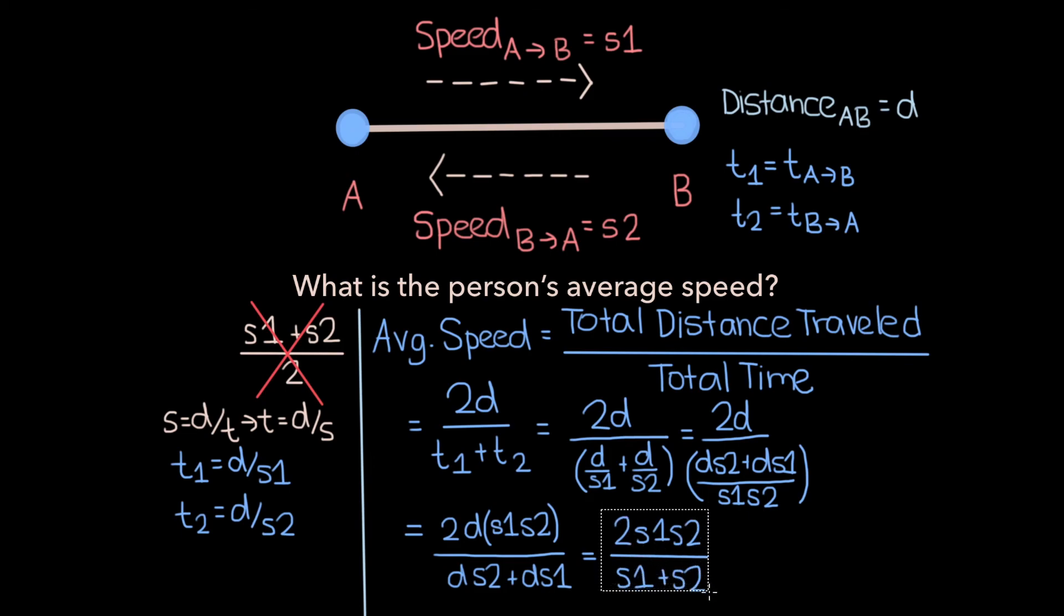And so this is the person's average speed in terms of the variables S1 and S2, which were the only variables the problem provided us.